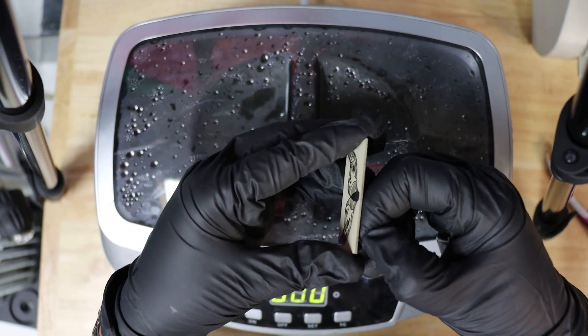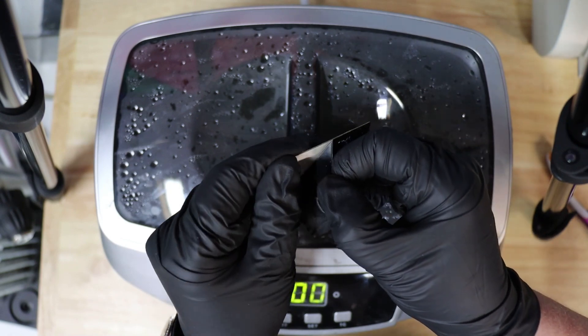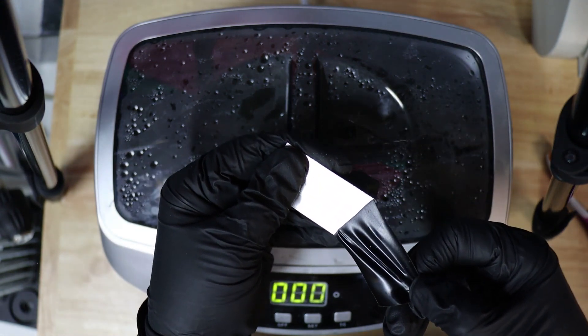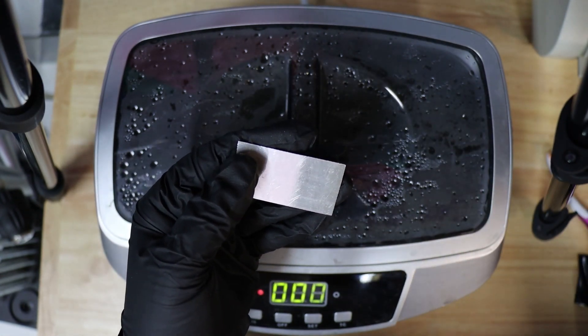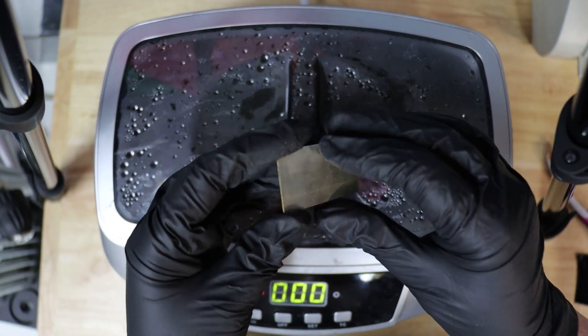I'll remove the resist from the back side, and we shouldn't see any etching on the back. And that did a really good job. That vinyl did protect the back side, scratches and all.